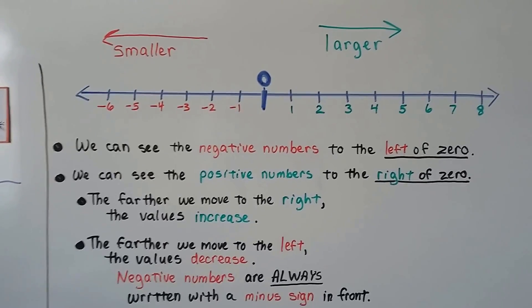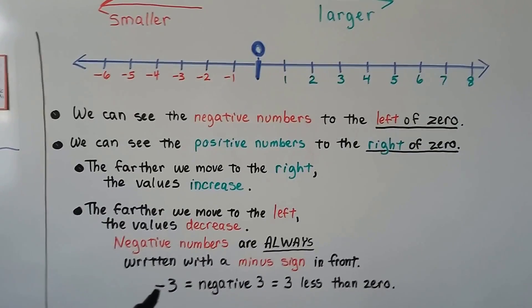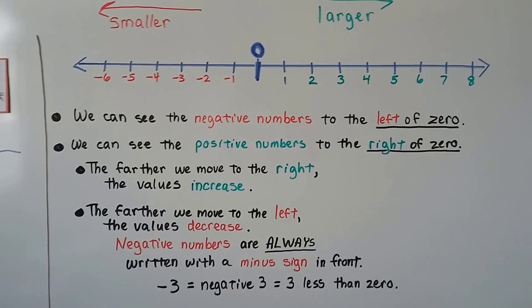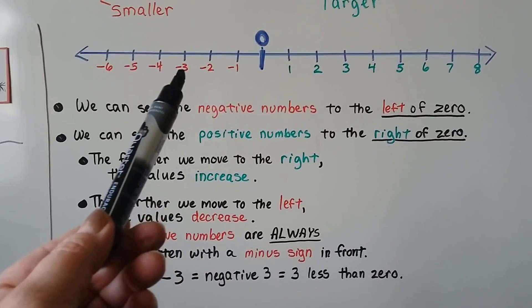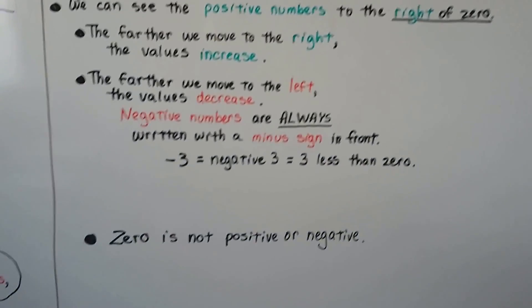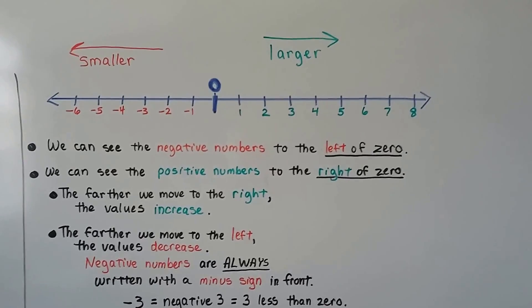Negative numbers are always written with a minus sign in front of them. So negative 3 looks like a minus 3. That means it's 3 less than 0. So here's 0 and we're going to go 1, 2, 3 less than 0. We're at negative 3. And 0 is not positive or negative. It's just 0. But it is an integer.